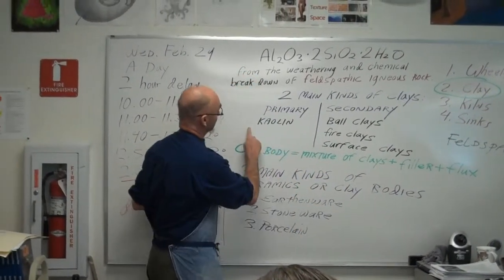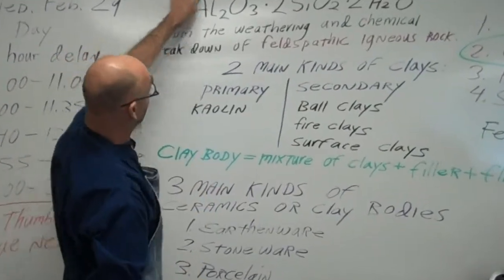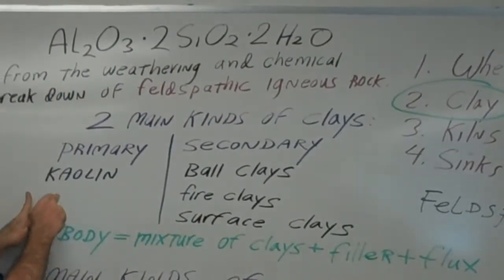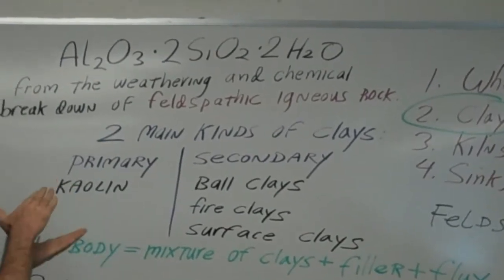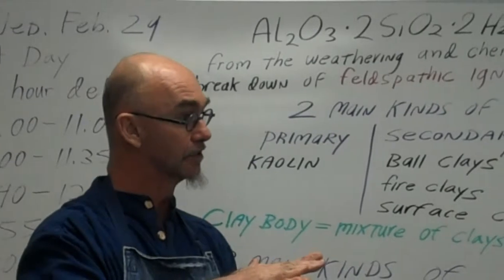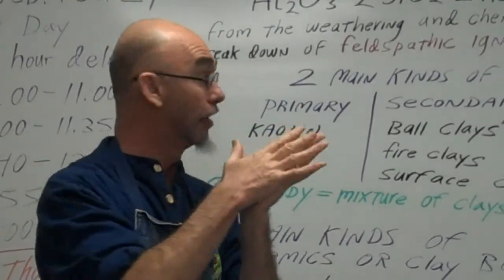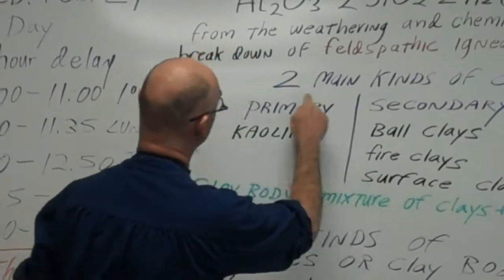So it's primary clay. The main primary clay is kaolin. This is actually the formula for pure kaolin. Primary clay is kaolin. Kaolin is not very plastic. It hasn't been worn down much, so the platelets and particles are big, and they don't slide on each other well, so it's not very plastic.